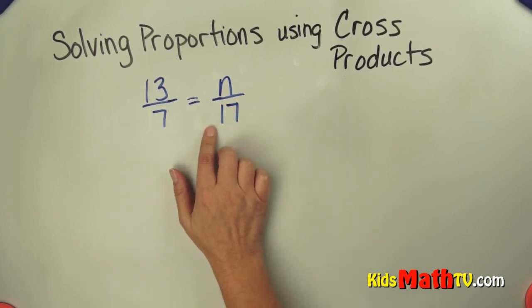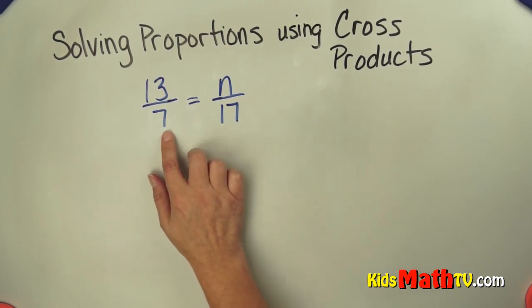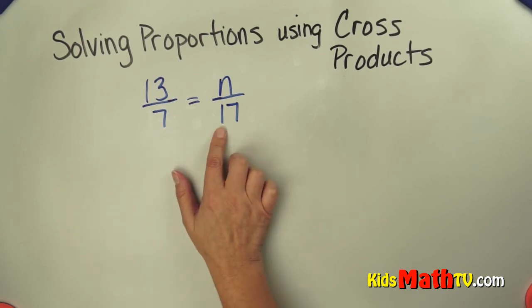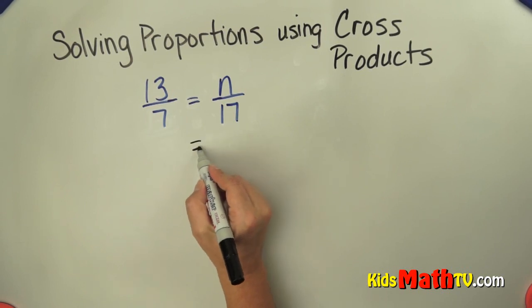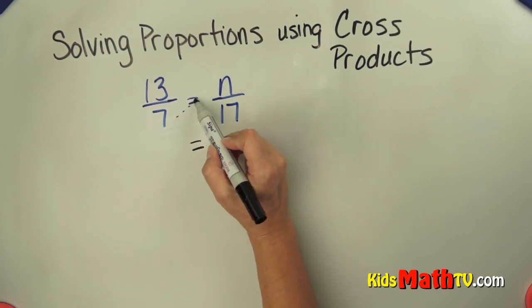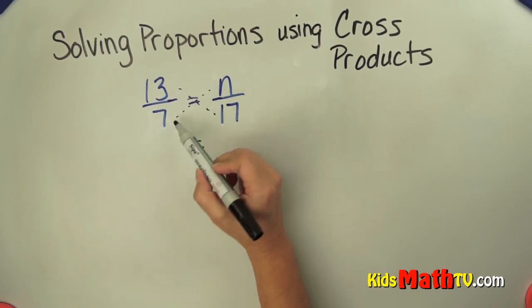I always like to check to see if I can make equivalent fractions here, but I can't get from 7 to 17 easily, so I'm going to use the cross products. And cross products, we simply are setting two products equal to each other, and we're doing them across.